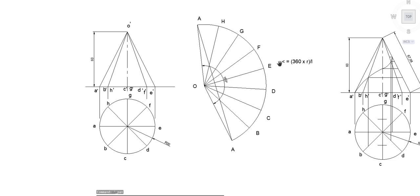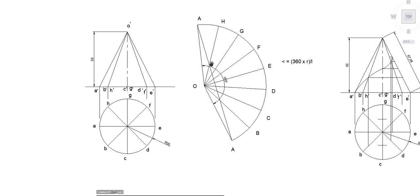Now for the development, you have an equation: Angle = 360 × R / L, where R is the radius of the object and L is the length of the slant edge O'E'. If you substitute R = 30 mm and L = 66 mm, you will get this angle as 160 degrees. Now take O'E' as radius and draw an arc with an arc angle of 160 degrees.